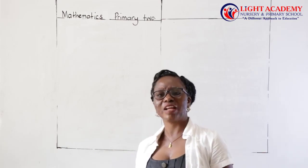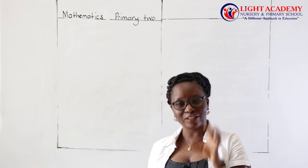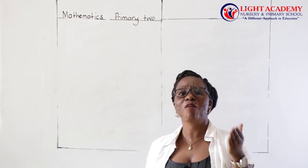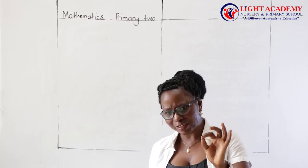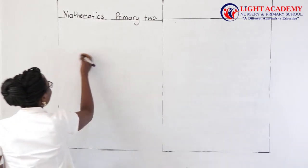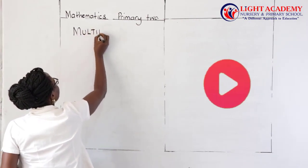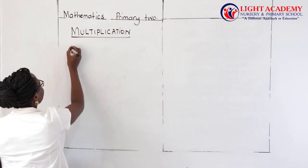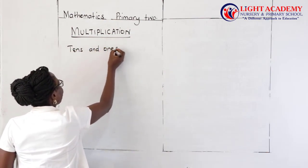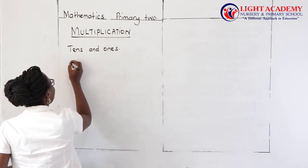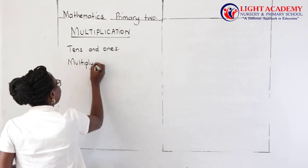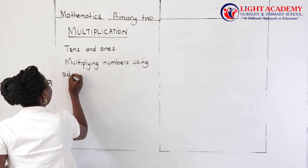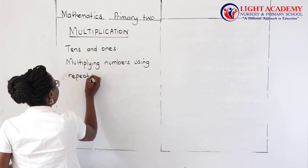I remember last time we looked at multiplication of numbers by using repeated addition. We were looking at multiplication of numbers, and we also looked at the tens and ones. And before that, we also looked at multiplying numbers using repeated addition.